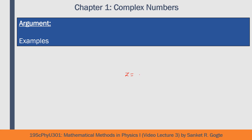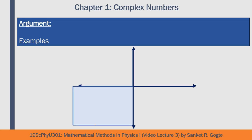For z equals minus 1 minus root-3 times i, using the calculator to find tan inverse of root-3 divided by 1 — since both are negative, their ratio is positive — gives pi by 3 radians. But that is incorrect. Since both real and imaginary parts are negative, the number lies in the third quadrant. The actual argument is minus pi plus pi by 3, which equals minus 2*pi by 3 radians, or equivalently 4*pi by 3 as a positive angle.